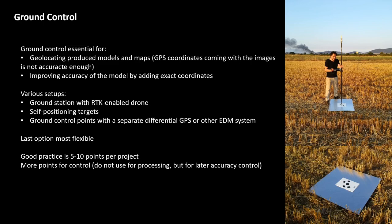There are various setups possible for dealing with ground control. One solution is to have an RTK-enabled drone — Real-Time Kinematic — meaning that technology improves the GPS coordinates recorded by the drone, so that every image or sensor data has a very high-quality geolocation. You need a ground station for this. It is relatively expensive, but it is very effective for drone remote sensing.